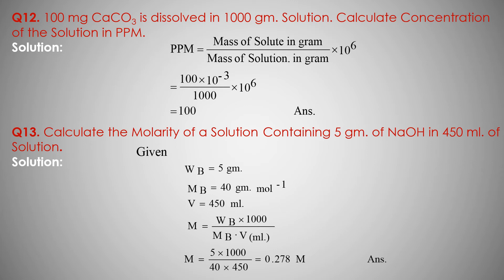Molecular mass of NaOH — Mb — equals 40 gram mol inverse. Volume of solution is 450 ml. Molarity formula: M equals mass of solute (Wb) upon molecular mass (Mb) into volume of solution (ml), with 1000 multiplied.